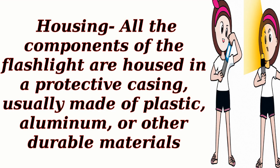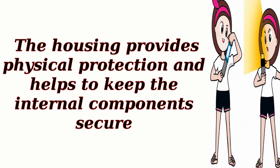Housing: all the components of the flashlight are housed in a protective casing, usually made of plastic, aluminum, or other durable materials. The housing provides physical protection and helps to keep the internal components secure.